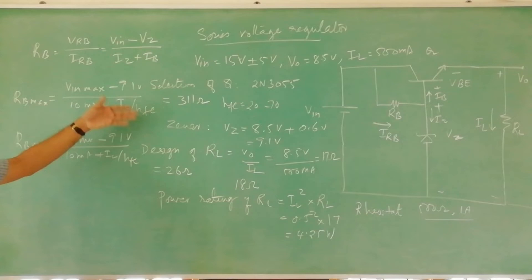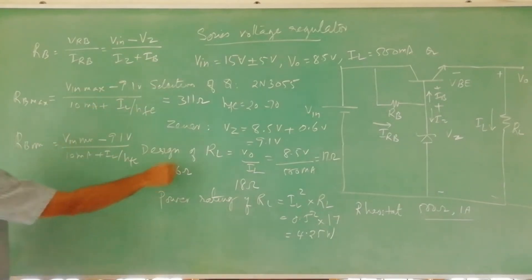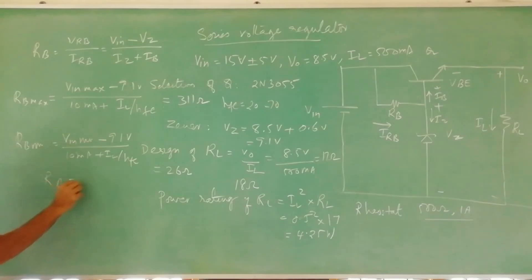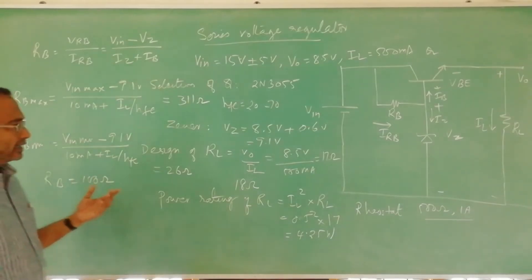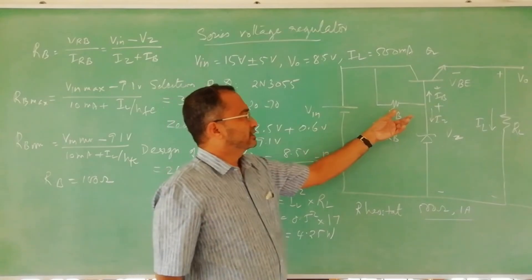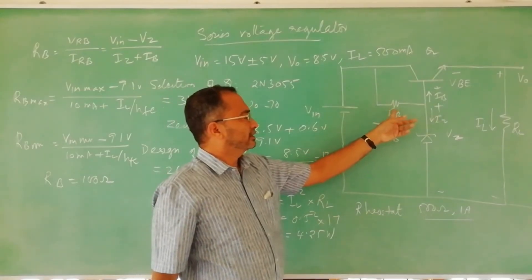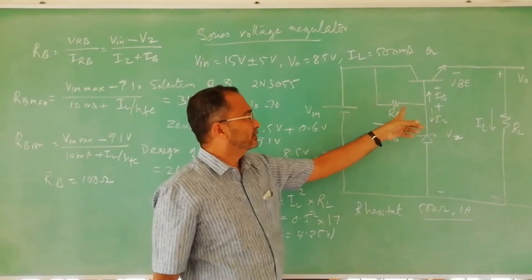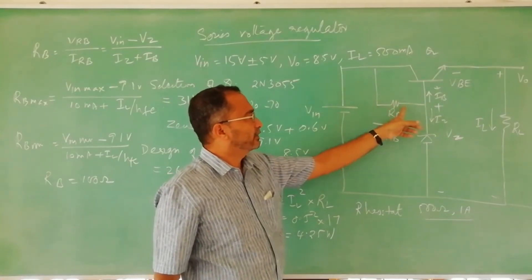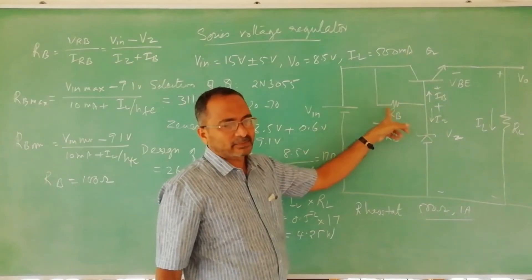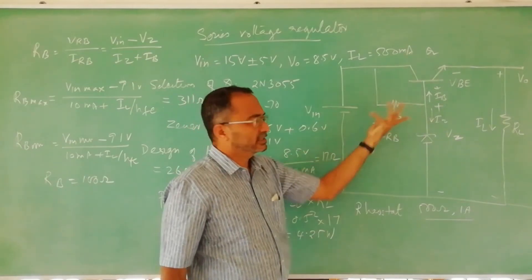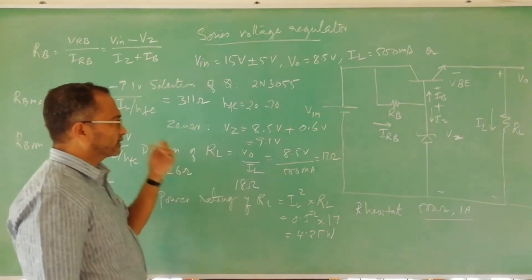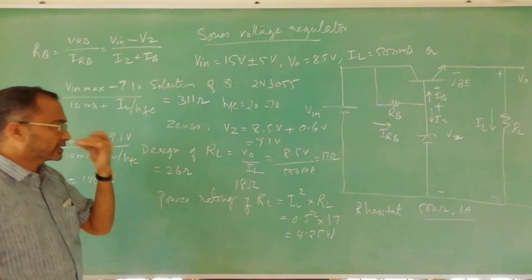We select an intermediate value between these two: RB equals 100 ohms. With approximately 35 milliamperes flowing through this resistance, the power rating is less than quarter watt, so a quarter-watt resistor is sufficient.